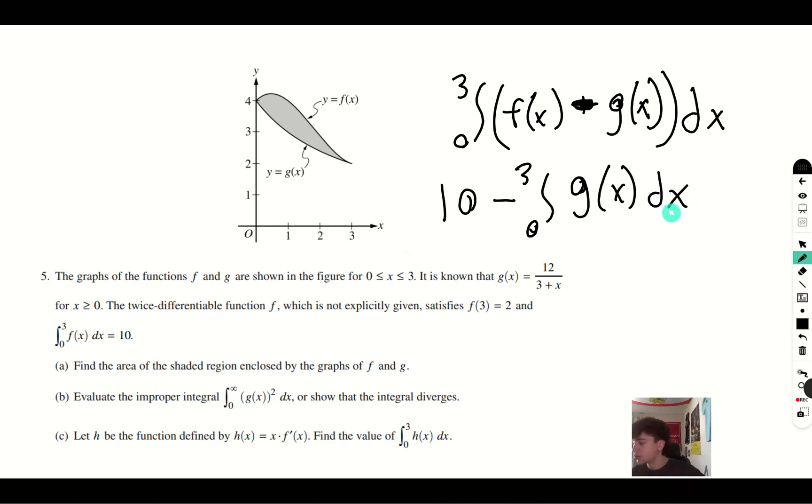This you can just plug into your calculator, or it's a pretty simple u substitution. The integral will turn out to 12 times the natural log of 3 plus x, and then you evaluate it from 3 to 0. In order to do it in a simpler method, we're just going to use our calculator.